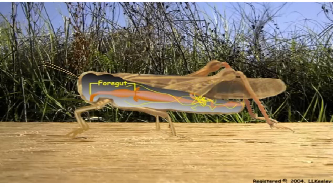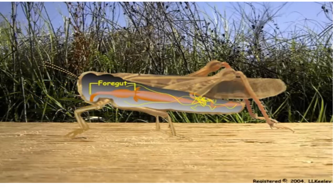The foregut is comprised of the mouth for ingesting food, the pharynx and esophagus for transporting food, and the crop where food is stored prior to digestion and absorption. If the food is solid, it moves from the crop into a muscular proventriculus, where it may be further ground before passing through the stomodeal valve into the midgut.